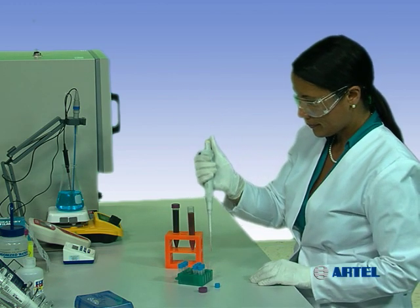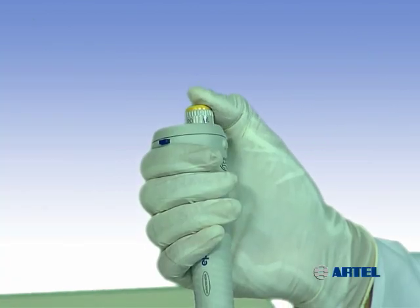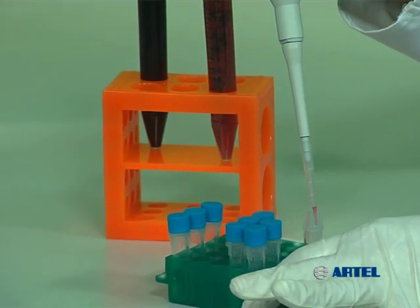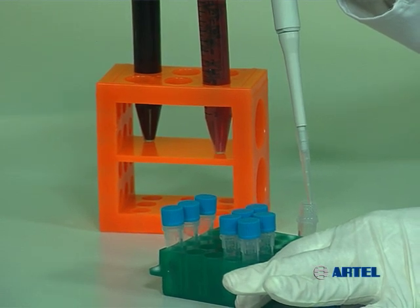Move the pipet to the transfer container and press the plunger to the first stop. Continue to press the plunger to the second stop to dispense any remaining solution in the tip.